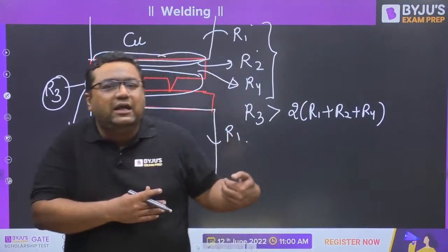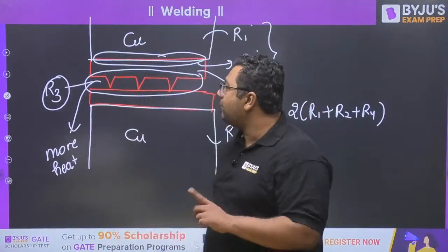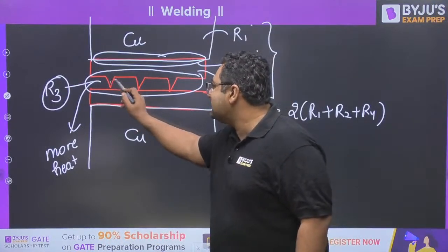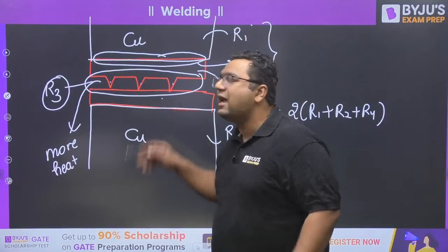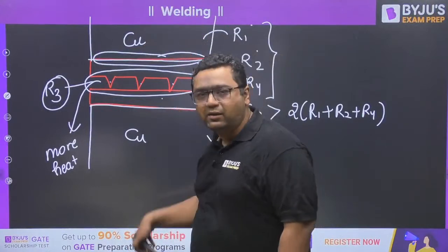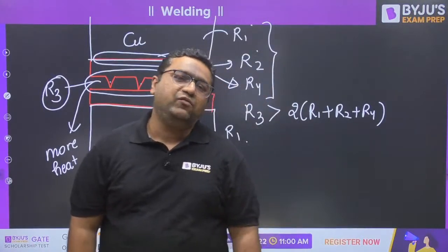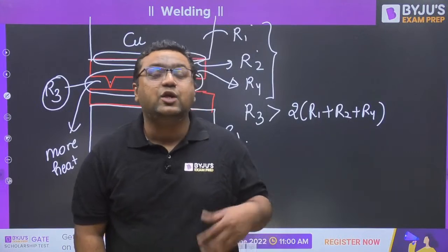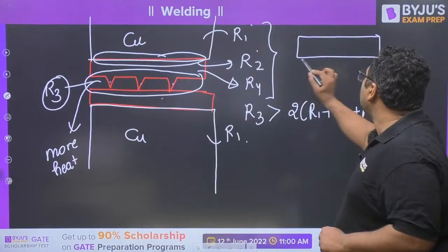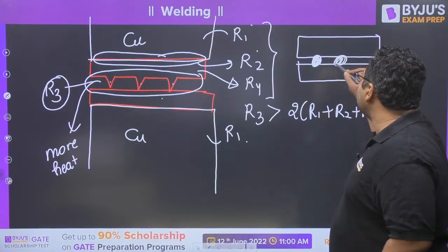When pressure is applied, the plates make contact and undergo plastic deformation. Then current is supplied, causing the three projections to become soft. When they become soft, they get converted into spots, and you get a spot-welded product where two plates are joined with multiple spots - first spot, second spot, and third spot.